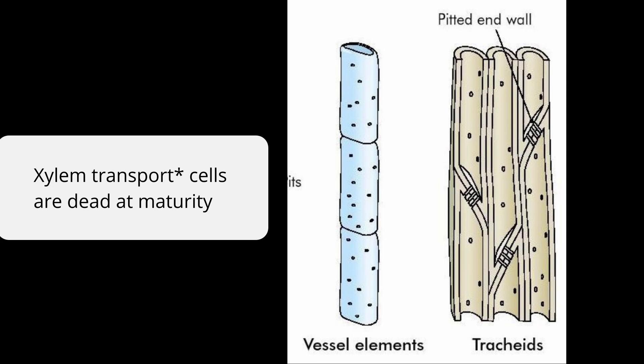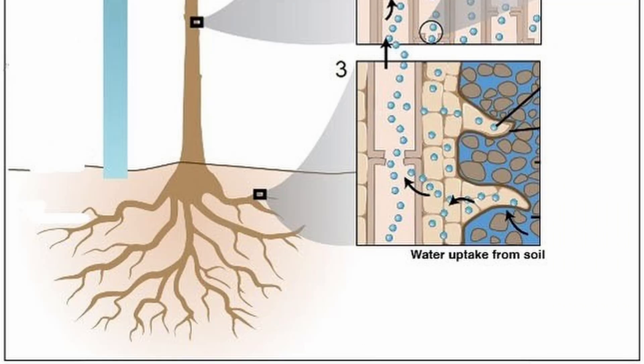When xylem cells are mature, they're actually dead. They're just empty cells that allow water to move through efficiently. For the most part, the water movement is passive. It takes the plant some energy to get water in from the soil, but once the water is inside the roots, there's no extra energy expended to pump the water up the tree.